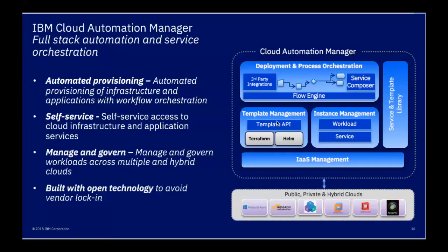At the top it has a flow engine — the Service Composer — which is the orchestration side. This is what differentiates it from a lot of environments: we can say build one type of service in ICP, one type of service in the public cloud, and one type in your private cloud, and bolt those together within the Service Composer. From a hardware perspective, it can manage a number of clouds at the bottom — IBM Cloud, OpenStack which is PowerVC, and Amazon Web Services — so it can control multiple clouds.